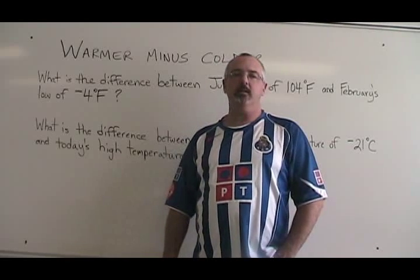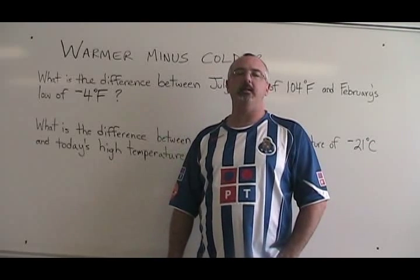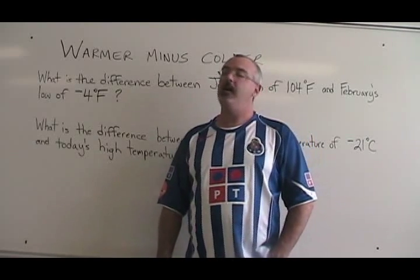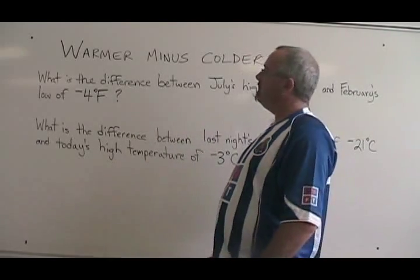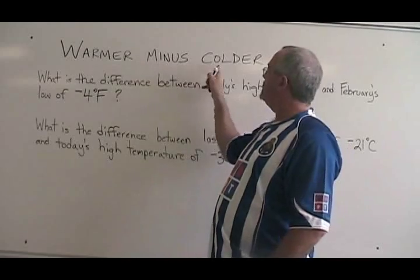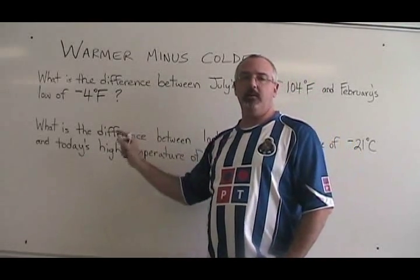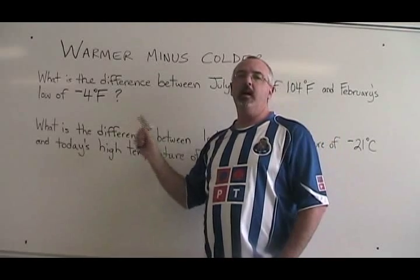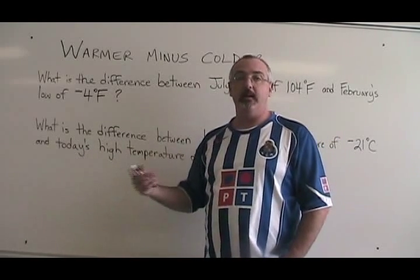In secondary one integers courses, sometimes we are asked the difference between two temperatures. There is a trick for finding the answer, which always works, and I call it warmer minus colder. It simply means you write the warmer temperature first, then you put a minus sign, and then you write the colder temperature, including a sign if it has one.